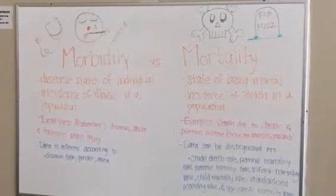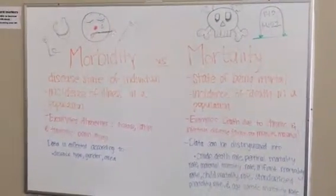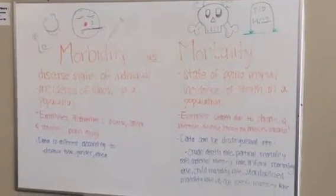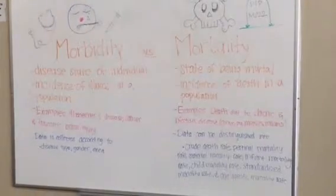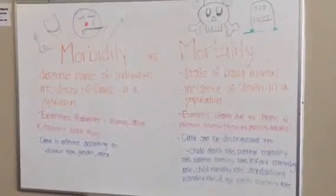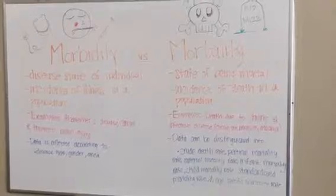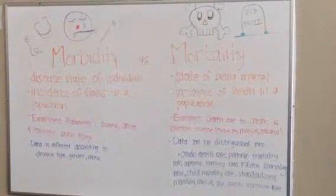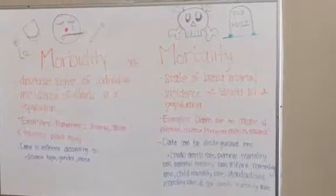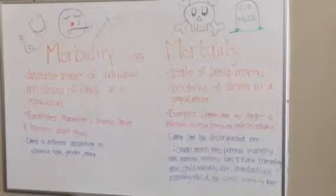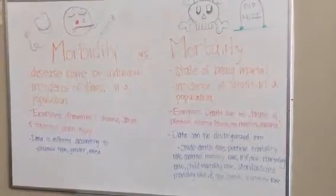Data can be distinguished into crude death rate, personal mortality rate, maternal mortality rate, infant mortality rate, child mortality rate, standardized mortality rate, and age-specific mortality rate. Thank you.